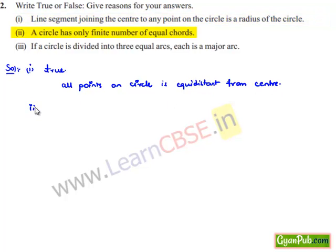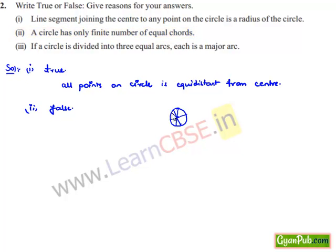Moving on to the second bit: a circle has only a finite number of equal chords — that is false. For example, if we consider a chord passing through the center, which is the diameter, since a circle has an infinite number of points on it, we can draw an infinite number of chords passing through the center. Therefore, we cannot say there will be a finite number of equal chords on the circle.